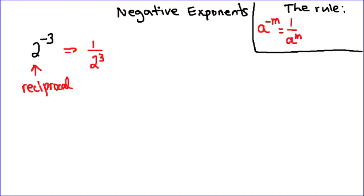This rule actually works in two directions. Because we can also say if I had 1 over b to the negative n, that is equal to b to the power of n.